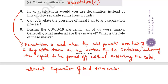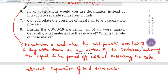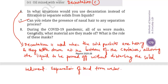Question number seven: Can you relate the presence of nasal hair to any separation process? Nasal hair acts like a natural filter — it traps dust, pollen, and other particles from the air while we breathe. It is similar to a filtration process where solid impurities are removed from a fluid. A detailed answer will be provided in the PDF available in the description.